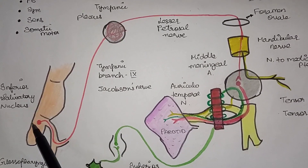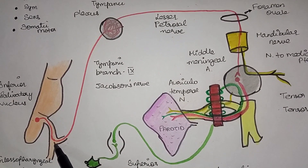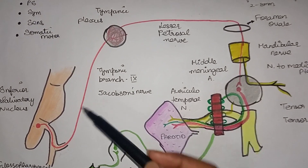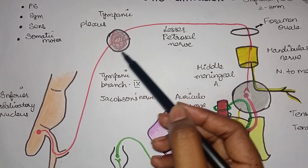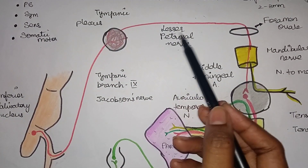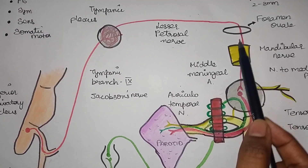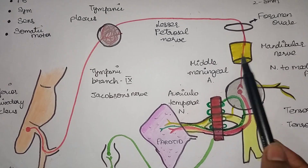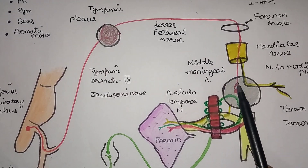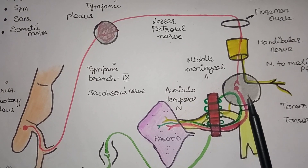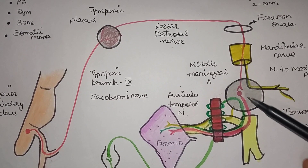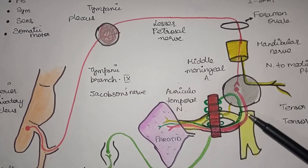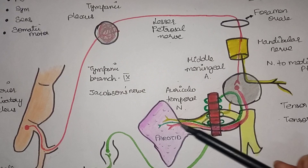To summarize the parasympathetic root: it arises from the inferior salivatory nucleus via the glossopharyngeal nerve, then the tympanic branch of the glossopharyngeal nerve forms the tympanic plexus, giving rise to the lesser petrosal nerve. The lesser petrosal nerve enters via the foramen ovale, attaches to the mandibular nerve, and relays in the otic ganglion. Post-ganglionic fibers travel via the auriculotemporal nerve to supply the parotid gland.